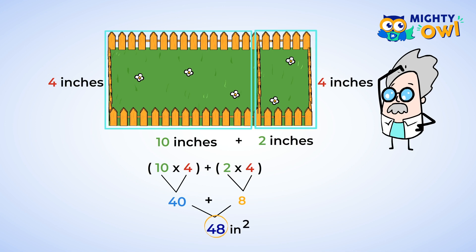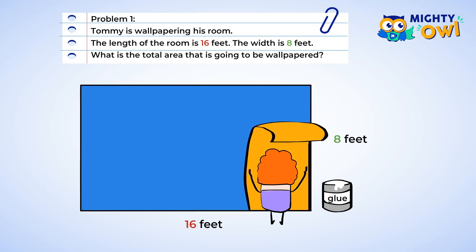That was much easier, and it was a great way to use the distributive property to help you solve a difficult problem. I want to practice this strategy a little bit more. Tommy is wallpapering his room. The length of the room is 16 feet and the width is 8 feet. What's the total area that is going to be wallpapered?